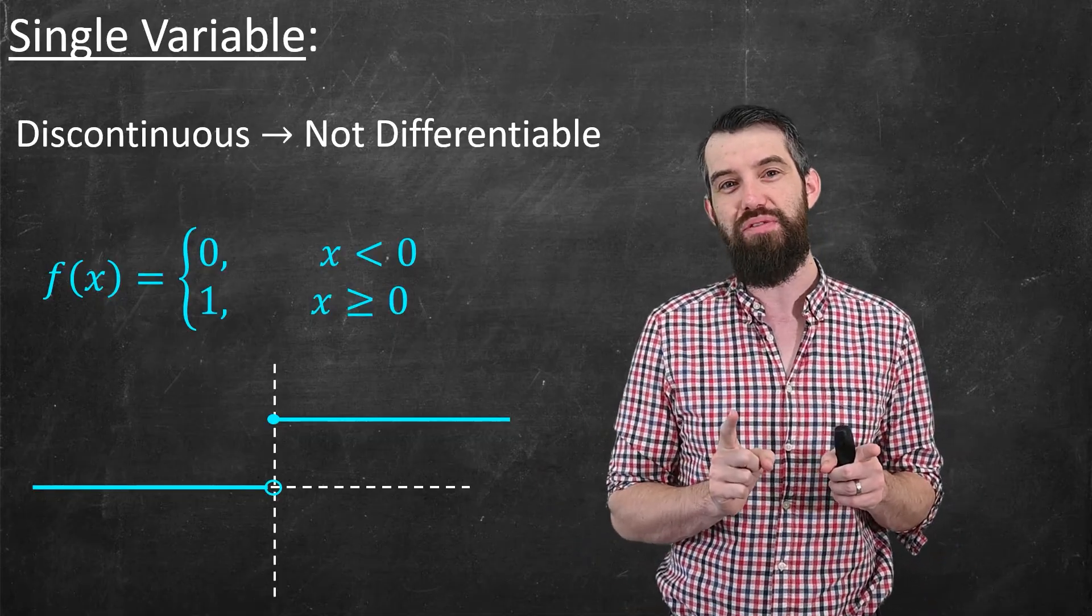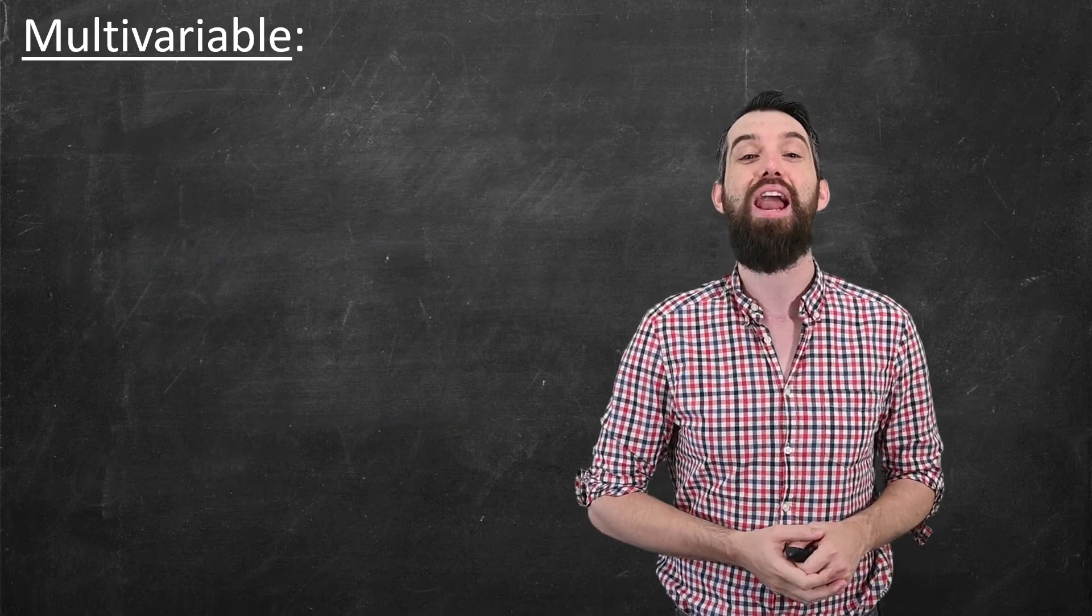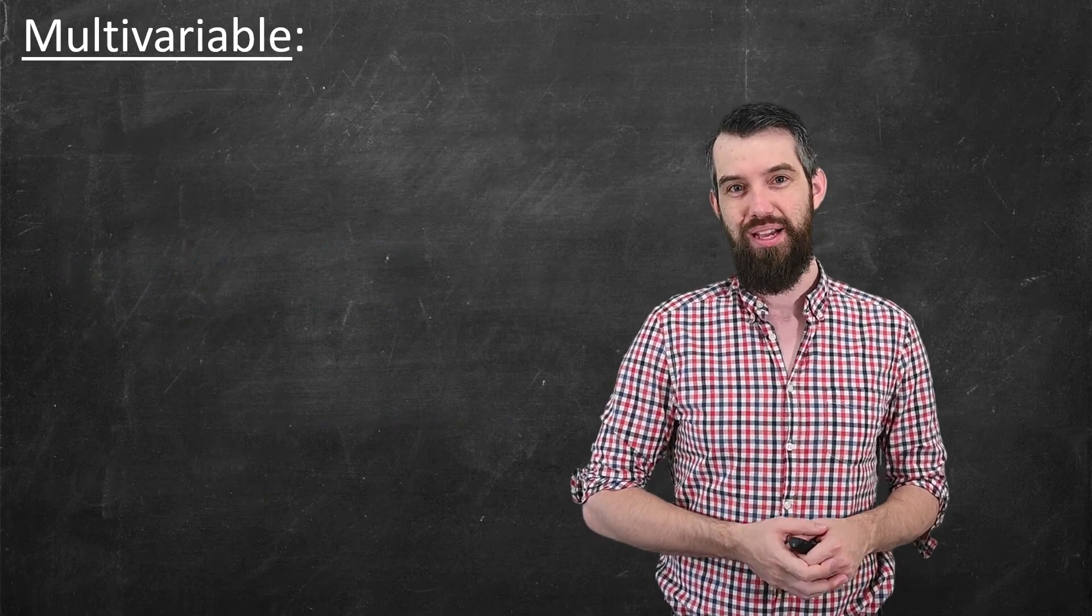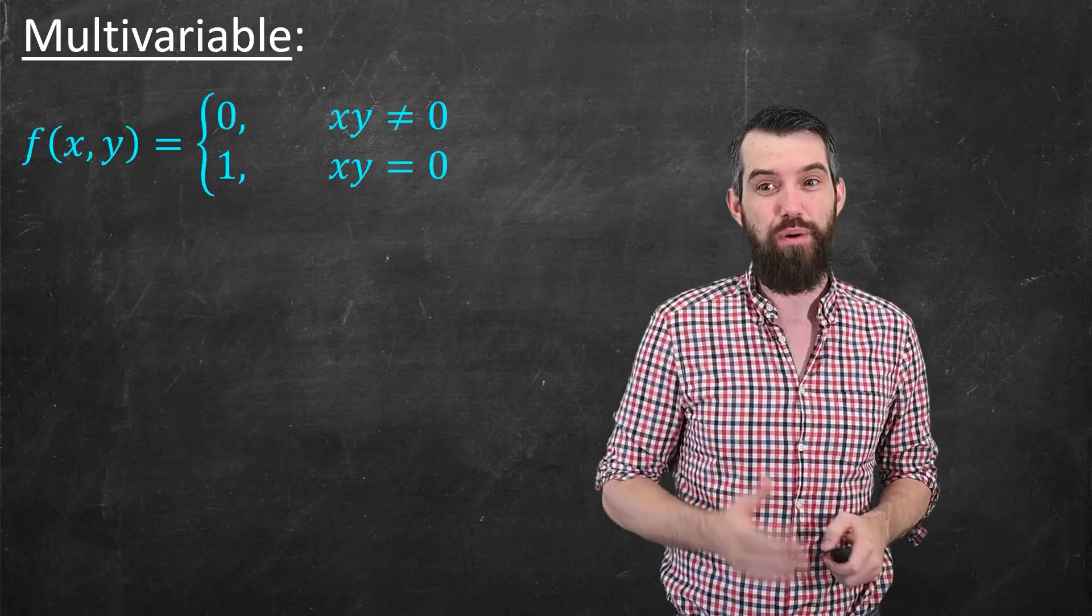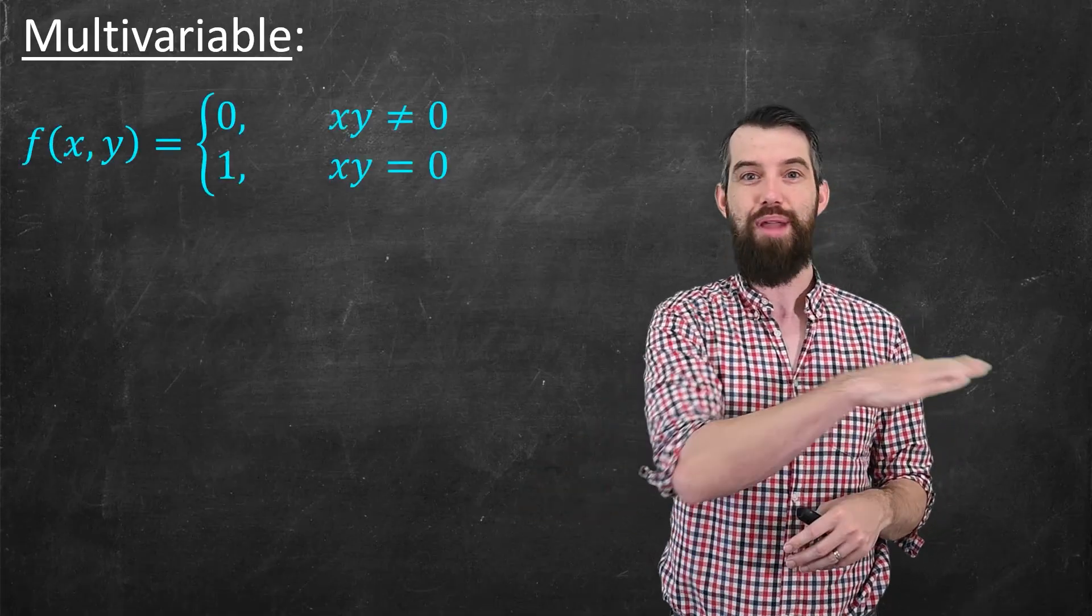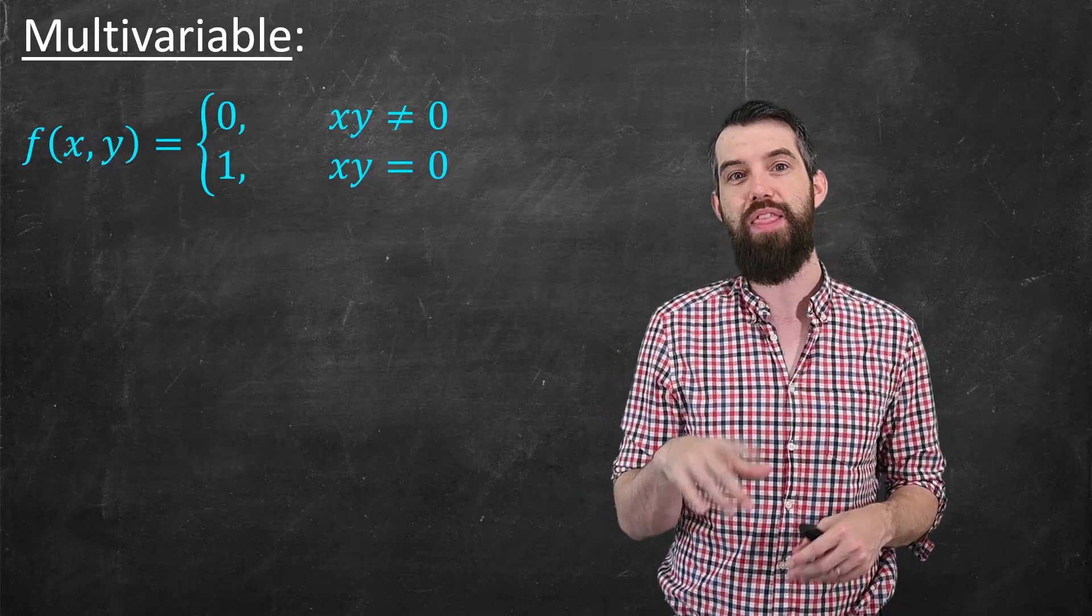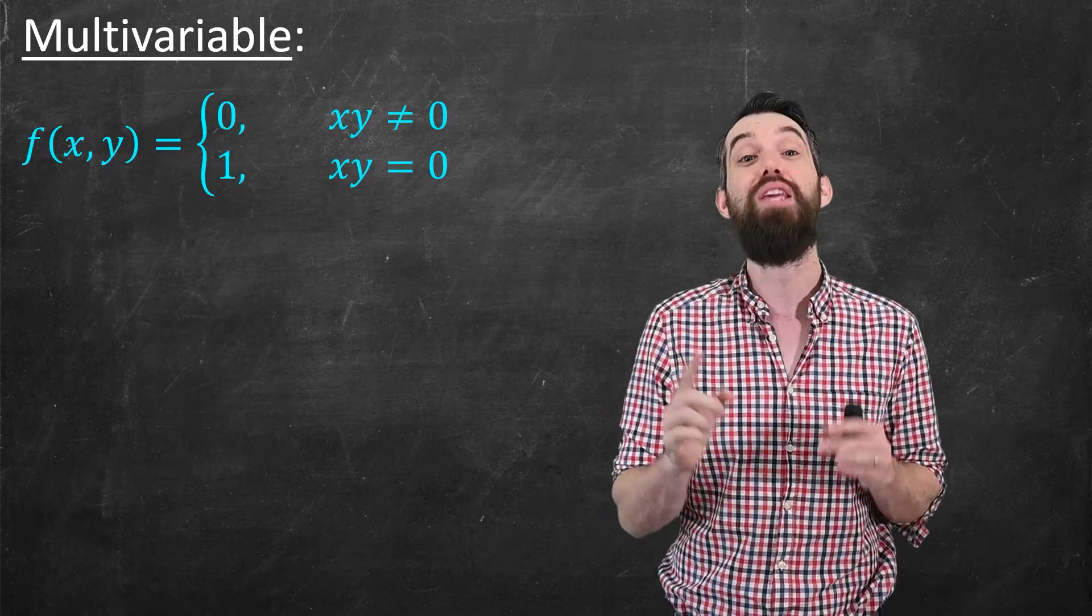But look what happens in sort of the higher dimensional analog of this exact same function. So we're talking about multivariable calculus now. And the function we're going to talk about looks superficially very similar. It's 0 for (x,y) not being equal to (0,0) and then 1 for (x,y) equaling (0,0).